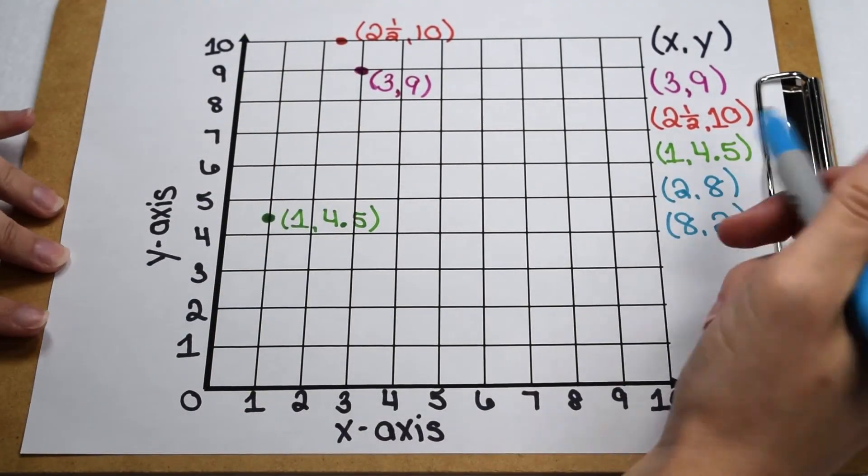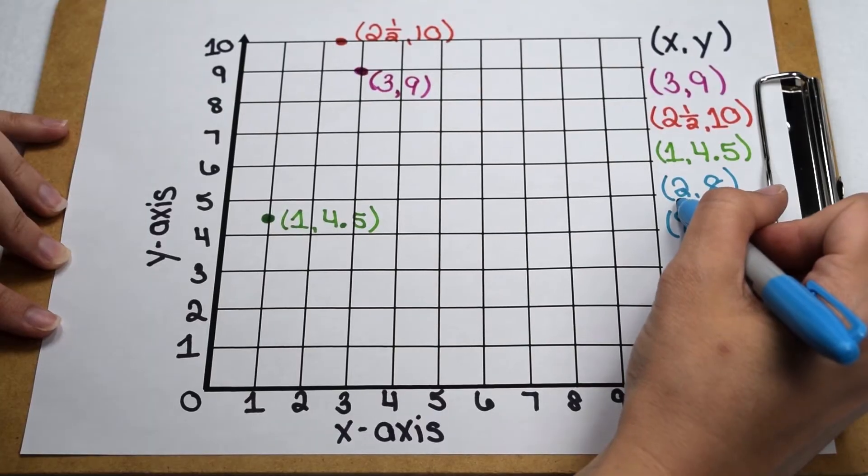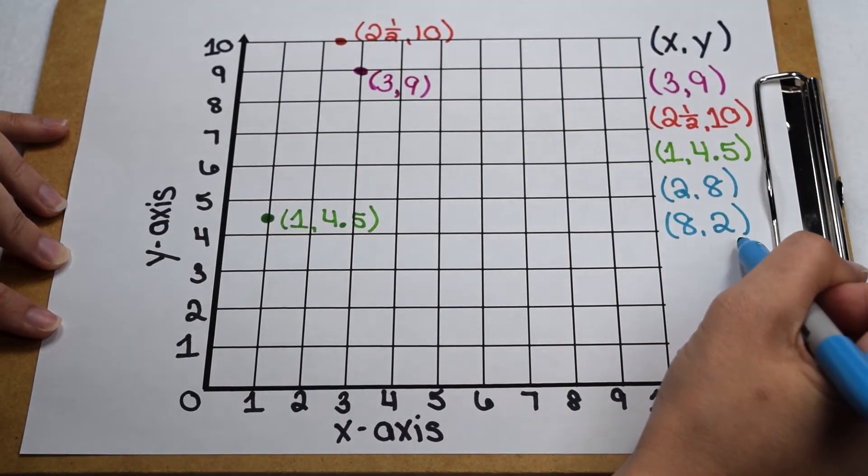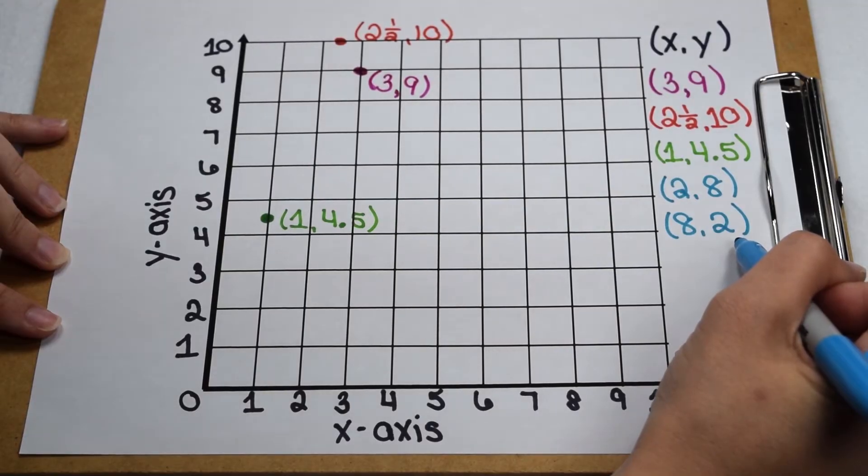On our last set of points, we notice they use the same values. Our first point is two, eight. Our second point is eight, two. This is where we see in plotting points that order truly matters.